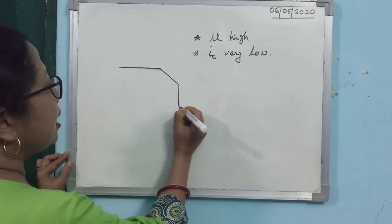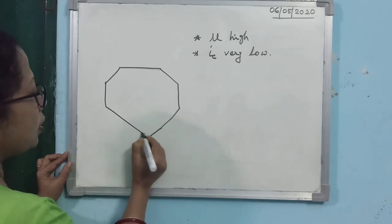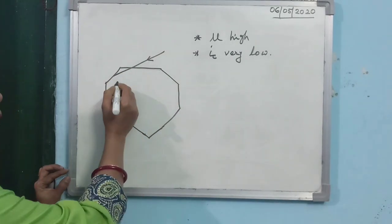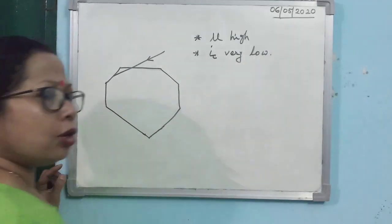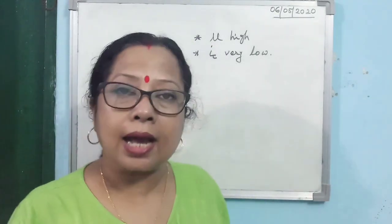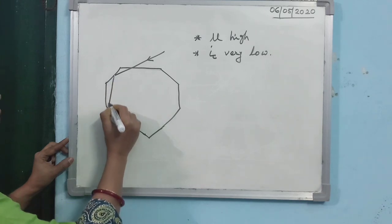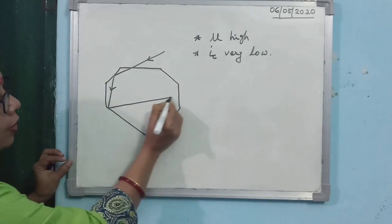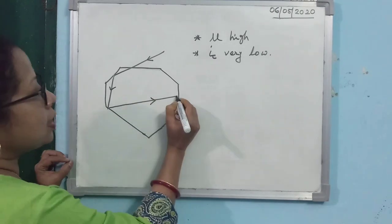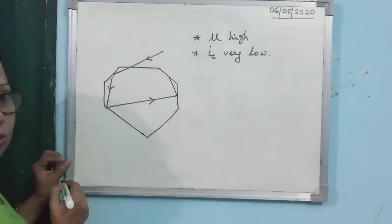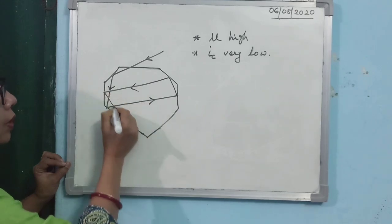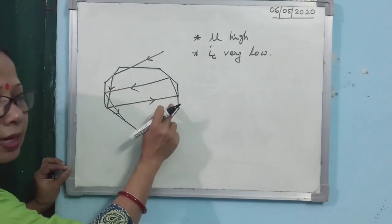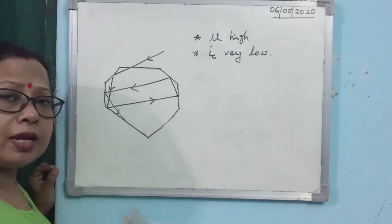Diamond is given a special kind of cut. When a light ray enters the diamond, because the critical angle is very low, it almost immediately suffers total internal reflection — and that point shines. The light then falls on another face, suffers total internal reflection again, and that point also shines. This continues — the light goes on reflecting within the diamond, and at every point of total internal reflection, that point appears very bright, shining like a mirror.